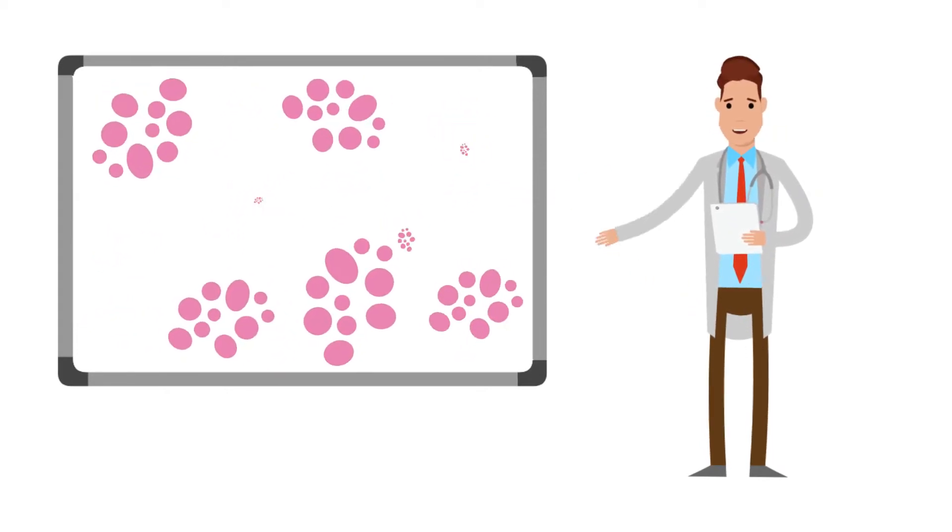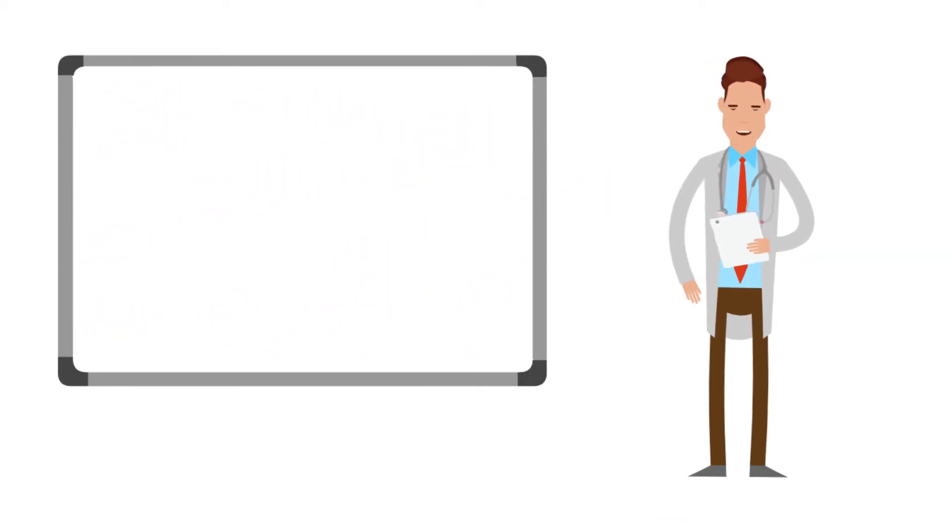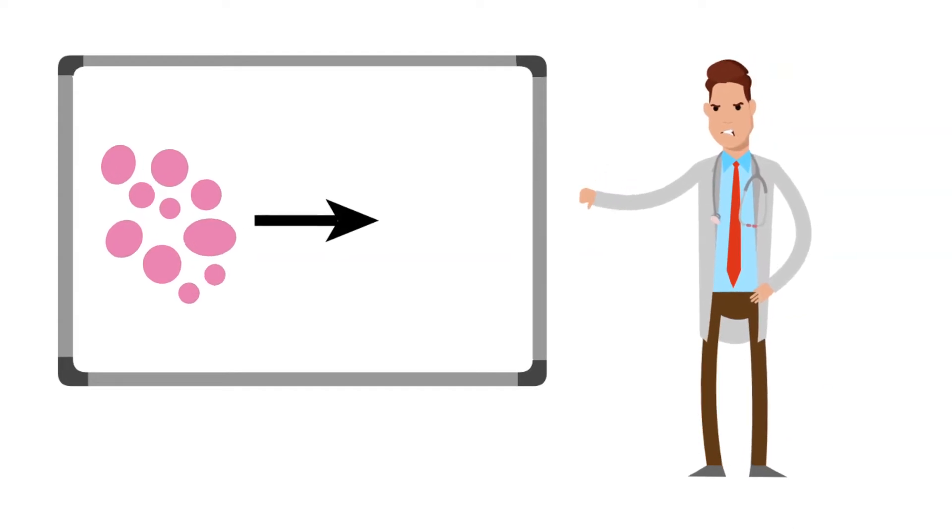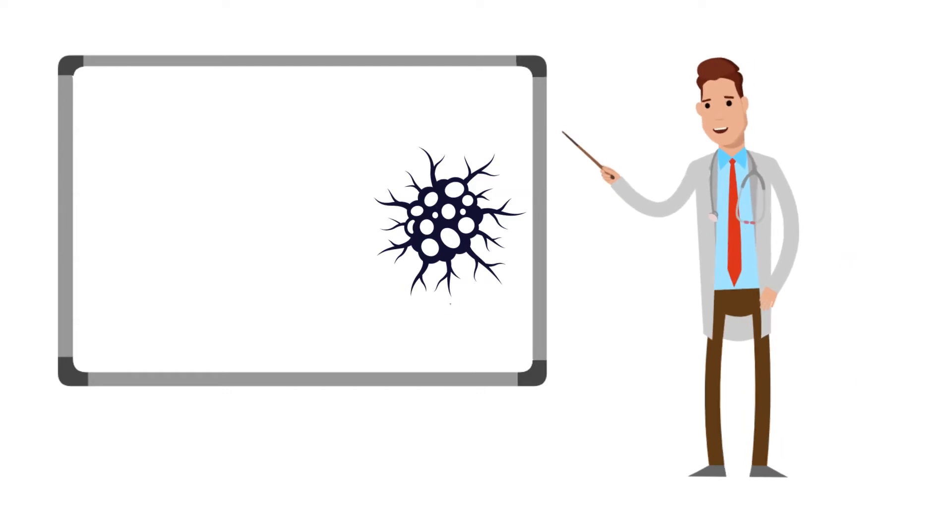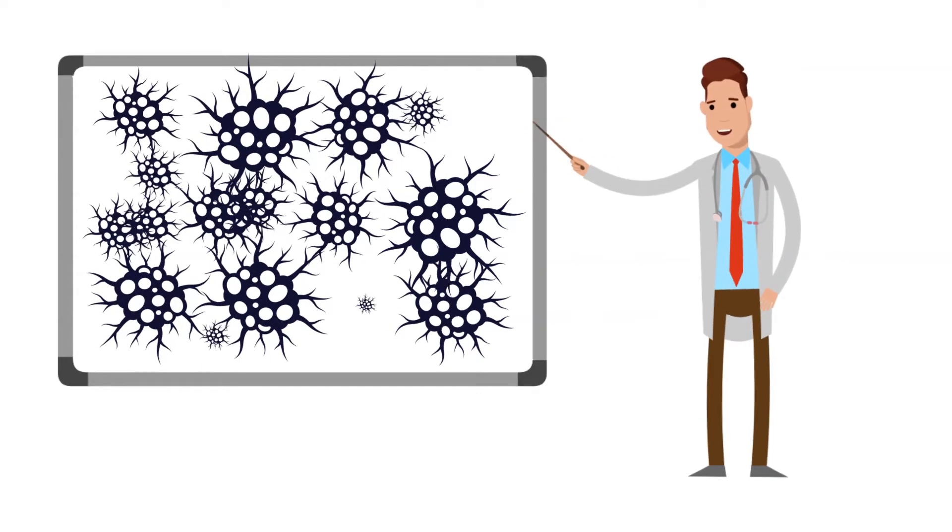These cells reproduce constantly and die off when worn out or damaged, but sometimes one cell can become sick and multiply out of control. These sick ones keep growing and continue to divide out of control without knowing when to stop.